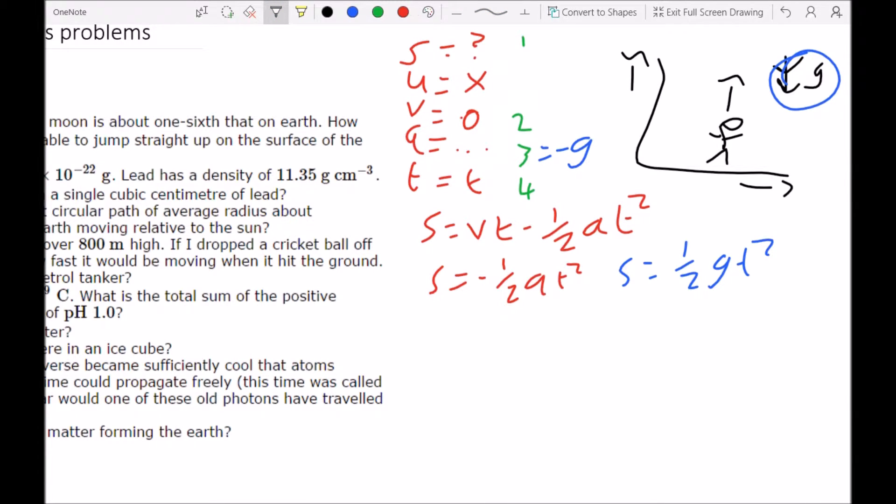If we look at what it looks like on the Moon, on the Moon we'll say a equals minus g over 6. And that means, because again it's going down in the opposite direction to the distance, that means you substitute in s equals half g over 6, t squared.